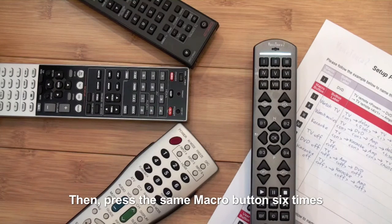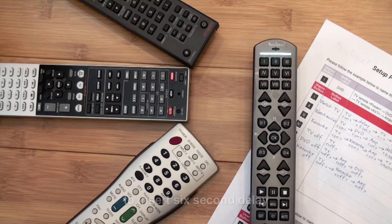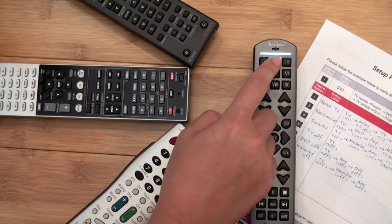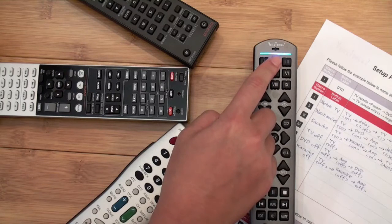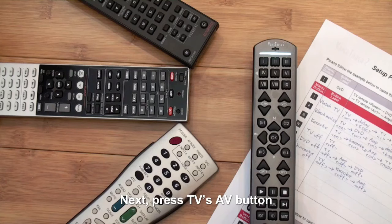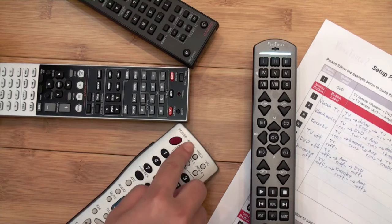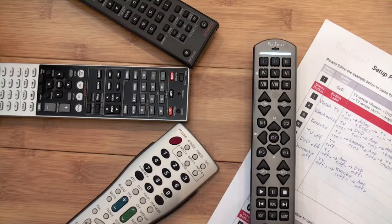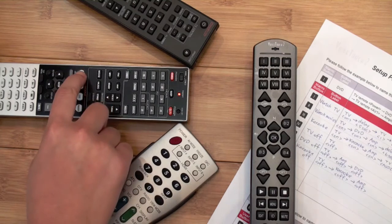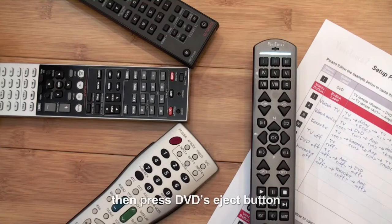Then press the same macro button 6 times to insert a 6 second delay. Next, press TV's AV button. Press amplifier's DVD button. Then press DVD's eject button.